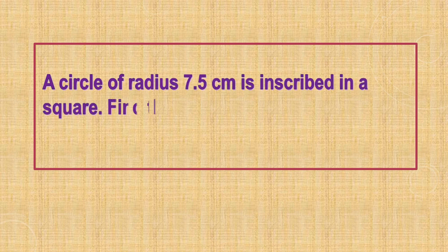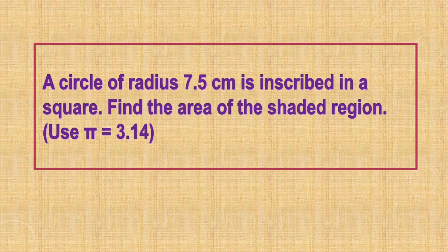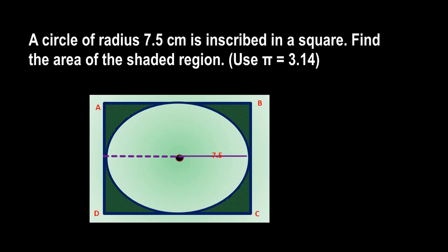A circle of radius 7.5 cm is inscribed in a square. Find the area of the shaded region. This is our required figure — we inscribed a circle inside a square ABCD, and the circle has a radius of 7.5 cm. We have to find the area of this shaded part of the square.